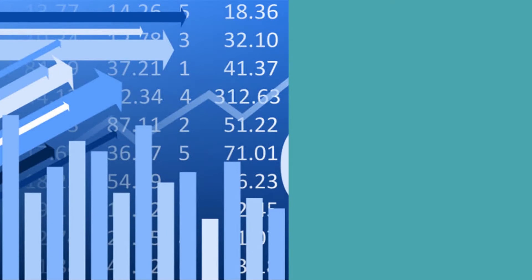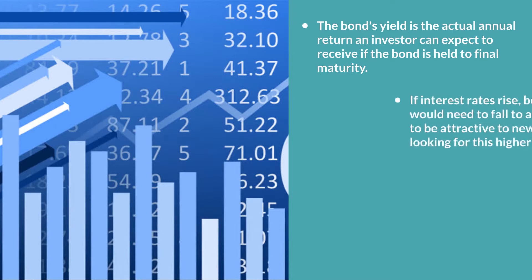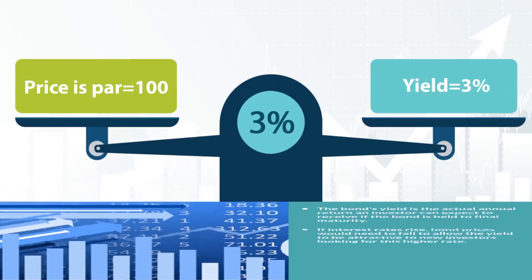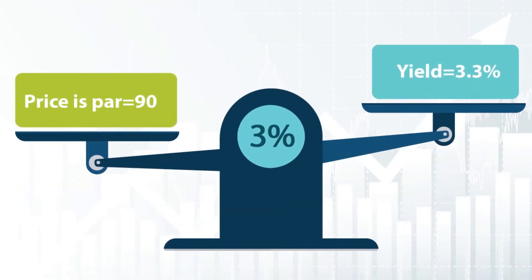Bonds are traded in the open market after they are issued. When they are traded in the open market, the bond's price and yield determine its value. The bond's yield is the actual annual return an investor can expect to receive if the bond is held to final maturity. Yields are based on the purchase price of the bond, and if interest rates rise, bond prices would need to fall to allow the yield to be more attractive to new investors looking for this higher rate. Here is an example: if the bond is paying a 3% coupon and rates remain constant, the price of the bond is at par or 100 and the yield would be at 3%. If rates rise, an investor would want a yield to reflect the current environment. The 3% coupon can't change, so in order to attract investors, the bond price would have to be lowered to, say, 90, so the yield is reflective of the higher market rates.